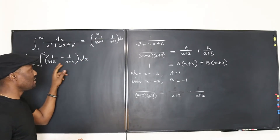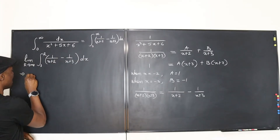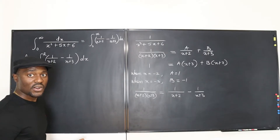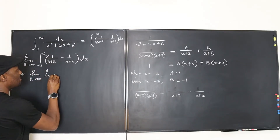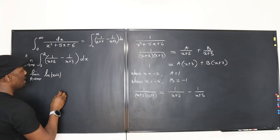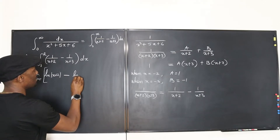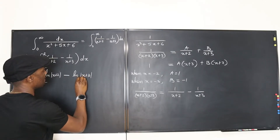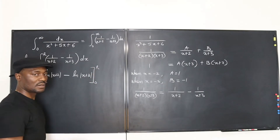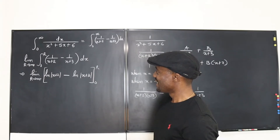The next step: since these are very easy linear functions, we can take the integral directly. This equals the limit as r goes to infinity of [ln|x+2| minus ln|x+3|], evaluated from 0 to r.